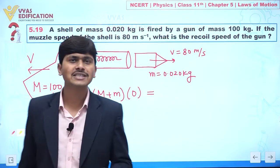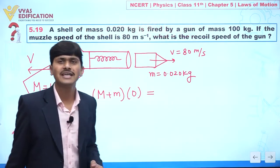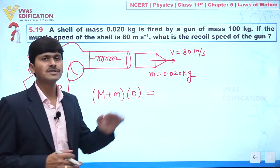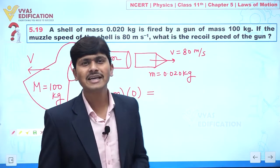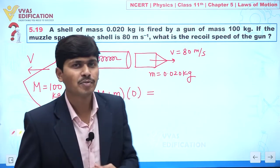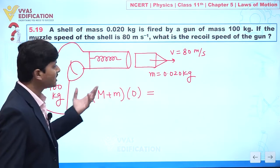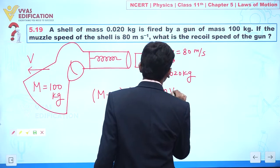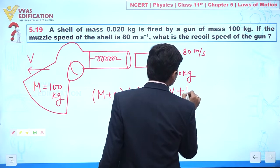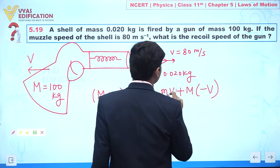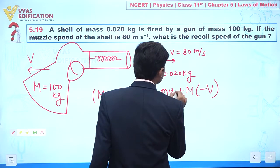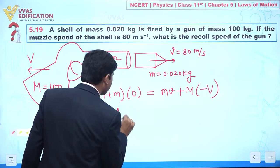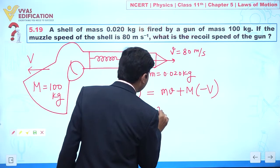In the horizontal direction, there is no external force acting. Therefore, momentum is conserved. The final momentum equals M × (−V) for the gun plus m × v for the shell, and this must equal the initial momentum of zero.